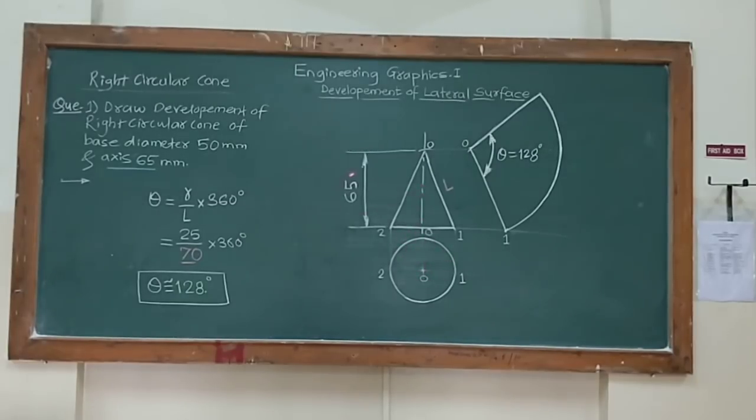Front view is axis 65 mm. So from this center line draw axis line and from this O point draw a line 65 mm which cuts this point O. Join this point 1 and 2 with O. We will get front view as triangle.